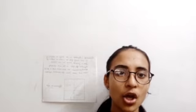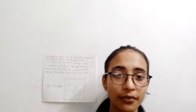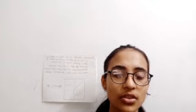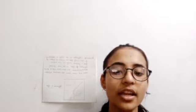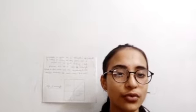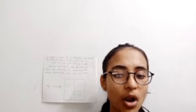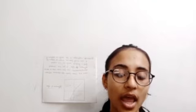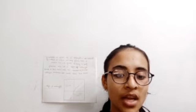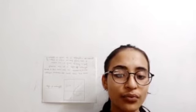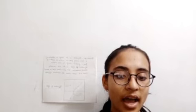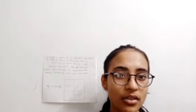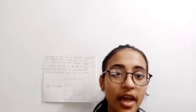Good morning dear respected teacher. Today I, Palak Johal of class 10C, am here to demonstrate an activity for refraction of light. Refraction is a change in the direction of a wave passing from one medium to another. Refraction of light has certain laws: the incident ray, the refracted ray, and the normal to the interface of two transparent media at the point of incidence all lie in the same plane. Second, the ratio of the sine of the angle of incidence to the sine of the angle of refraction is a constant for the light of a given color and for a given pair of media — this law is also known as Snell's law. If i is the angle of incidence and r is the angle of refraction, then sin i / sin r = constant.